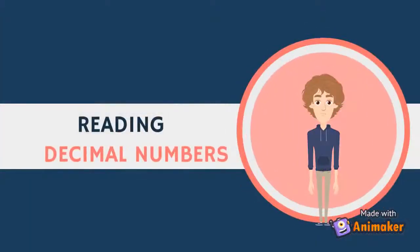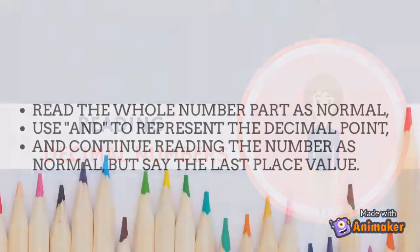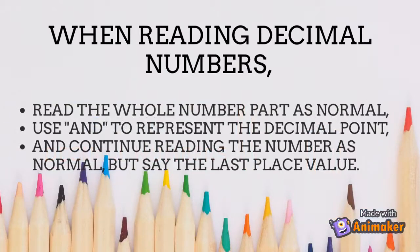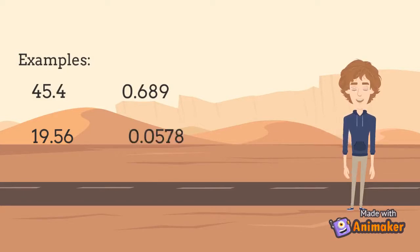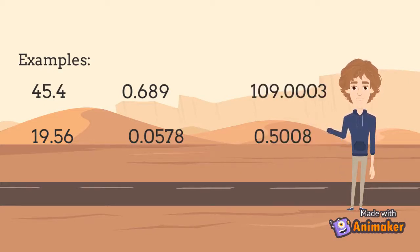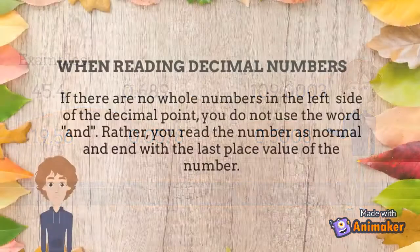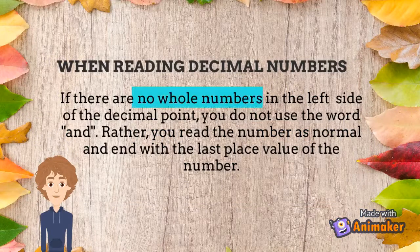Let us now have reading decimal numbers. To read decimal numbers: read the whole number part as normal, use AND to represent the decimal point, and continue reading the number as normal but say the last place value. If there are no whole numbers on the left side of the decimal point, you do not use the word AND. Rather, you read the number as normal and end with the last place value of the number.